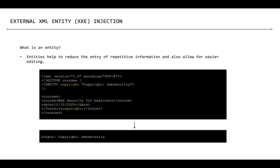One of the benefits of entities is to help reduce the entry of repetitive information and also allow for easier editing. For example, if you need to change this text, you can simply change it in one place and that reflects everywhere else in the document because you are just referencing it using an entity. So that is an entity.